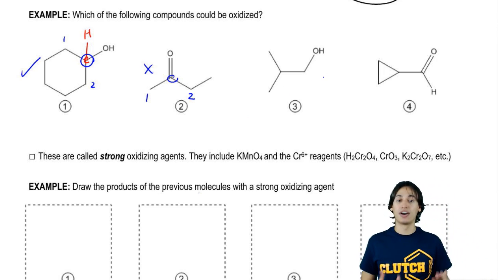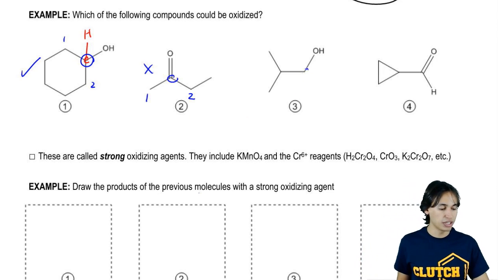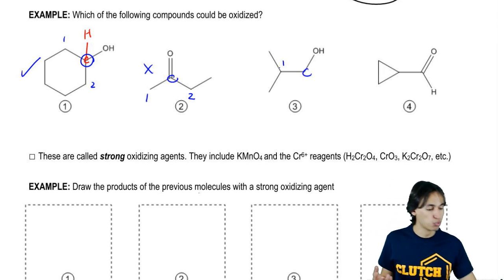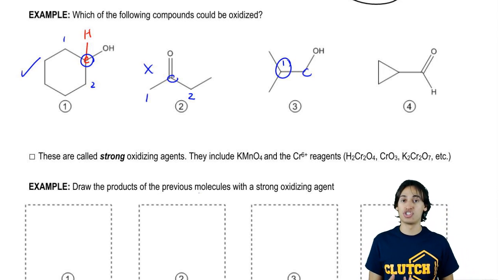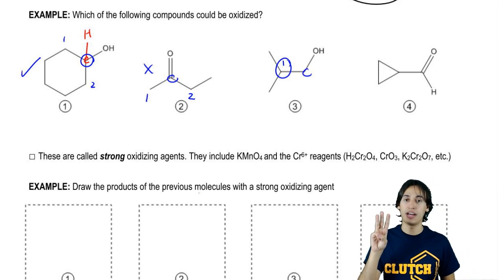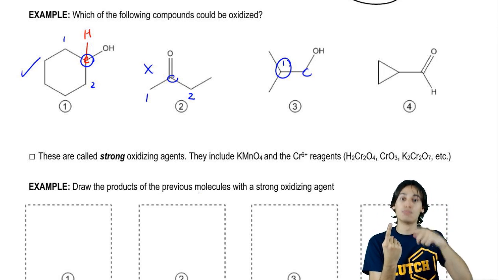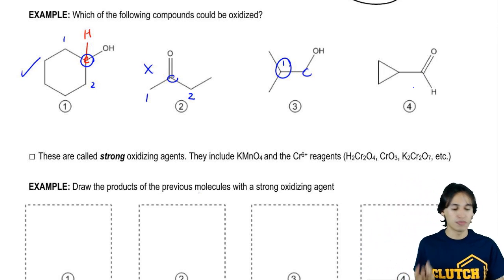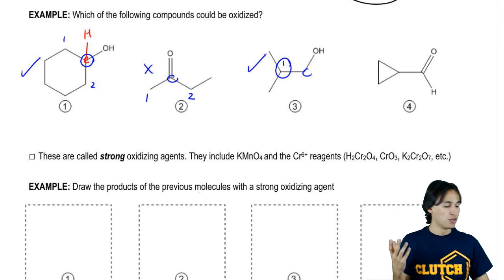Could three be oxidized? Yes, because it only has one bond to carbon. So that means if it only has one bond to carbon, then it could have how many bonds to oxygen? Three. How many bonds does it have right now? Only one. So it could actually be oxidized more than once. And then finally we have compound number four — three gets a checkmark.